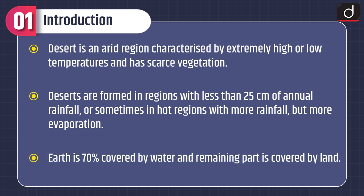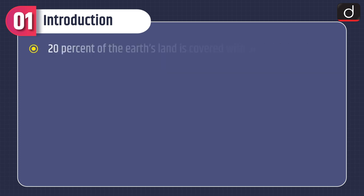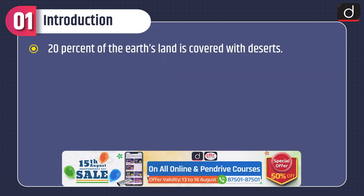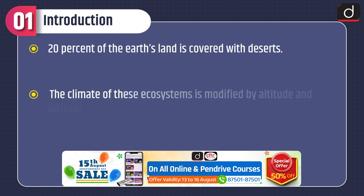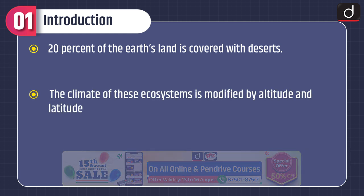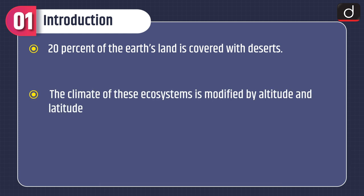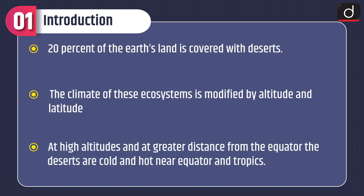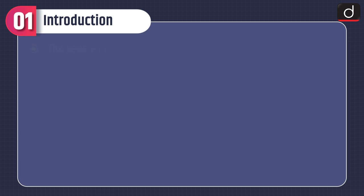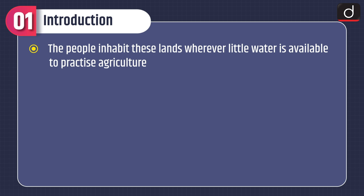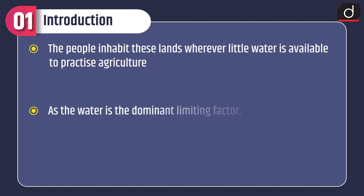Earth is 70% covered by water and the remaining part is covered by land. 20% of the Earth's land is covered with deserts. The climate of these ecosystems is modified by altitude and latitude. At high altitudes and at greater distance from the equator, the deserts are cold, and hot near the equator and tropics. The people inhabit these lands wherever little water is available to practice agriculture, as water is the dominating limiting factor.